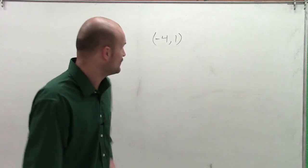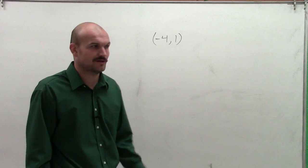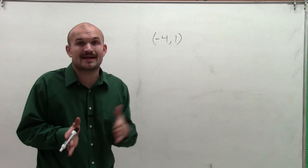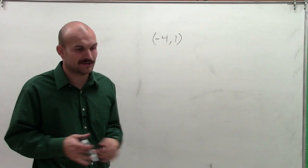So what we're going to have to do is notice that this point is not going to be on the unit circle. Because remember, the unit circle only had a radius of 1. If I'm going over 4 and up 1, we know that's not going to be on the unit circle.